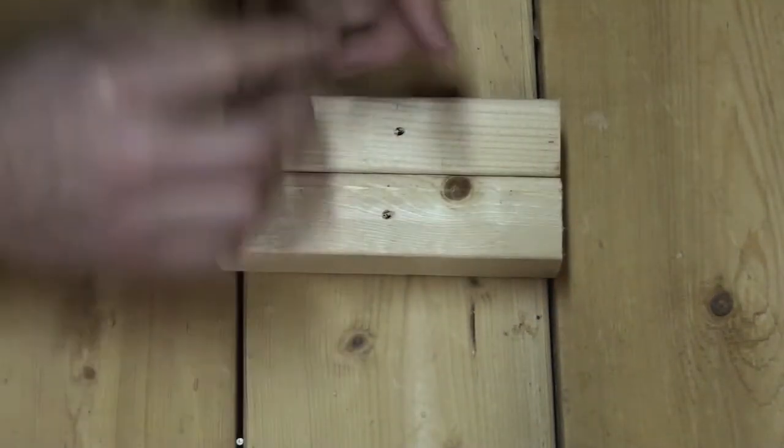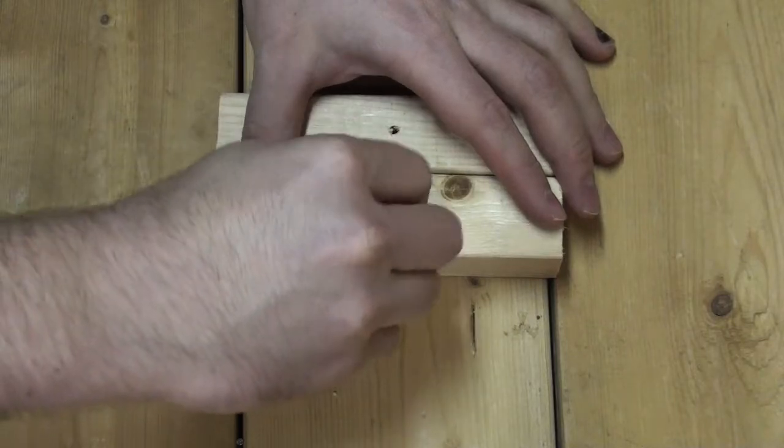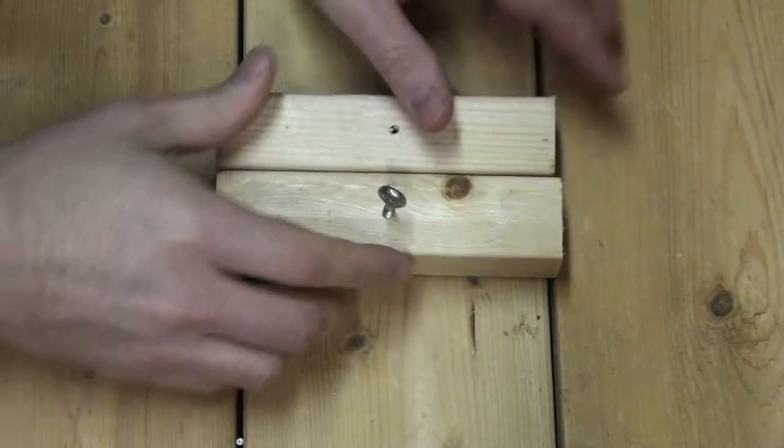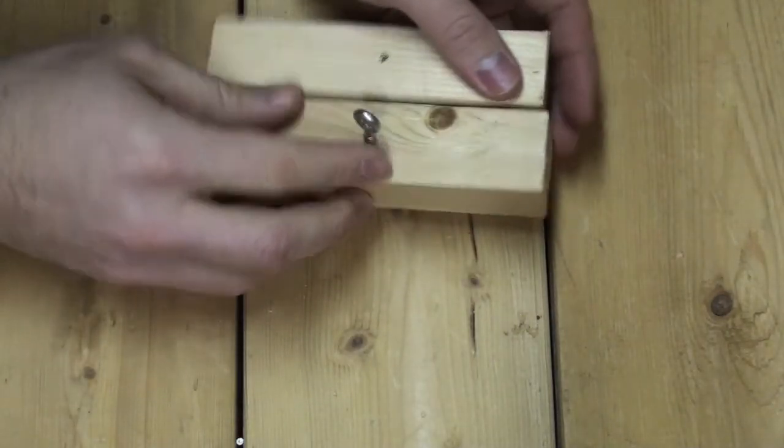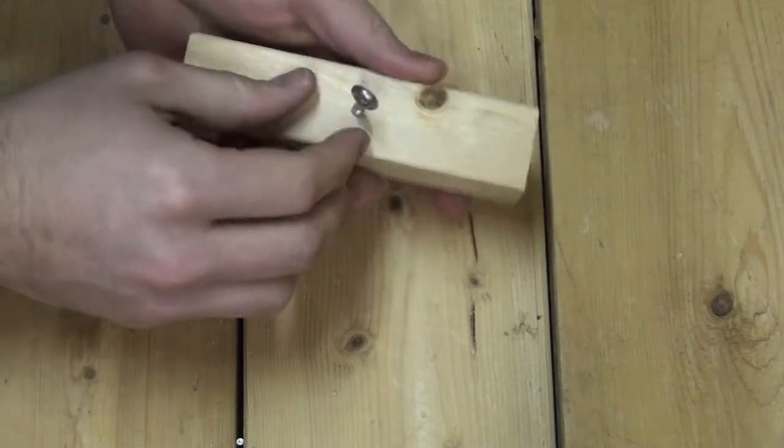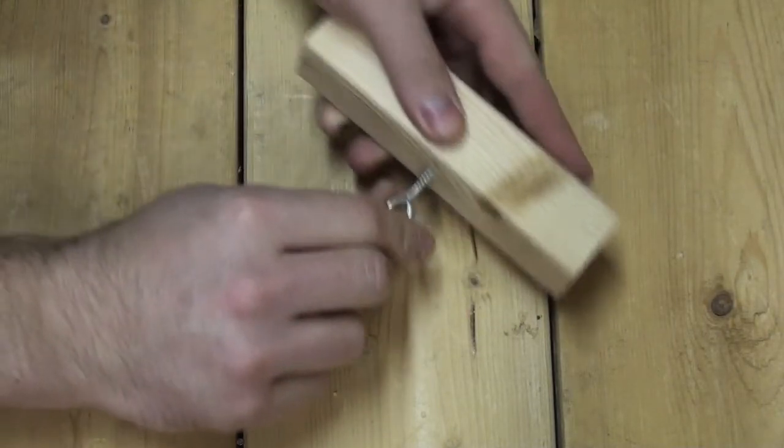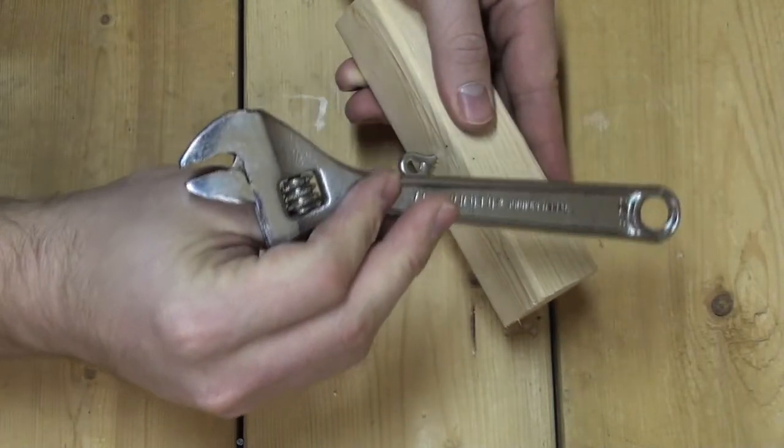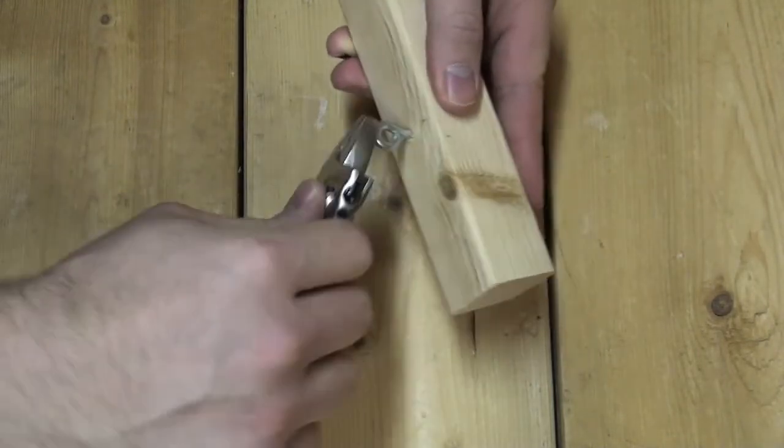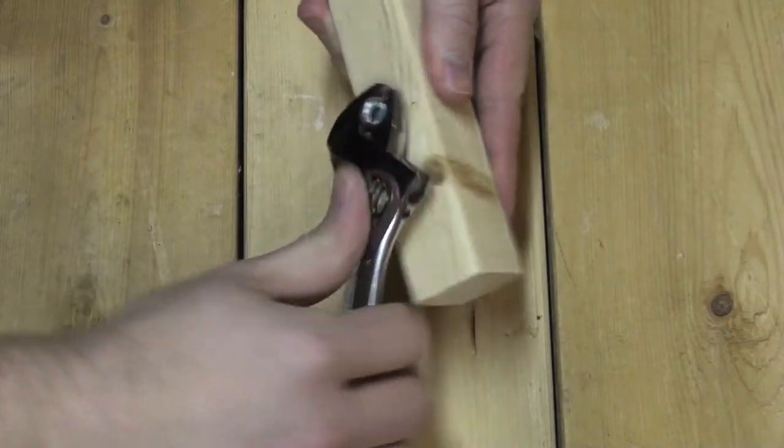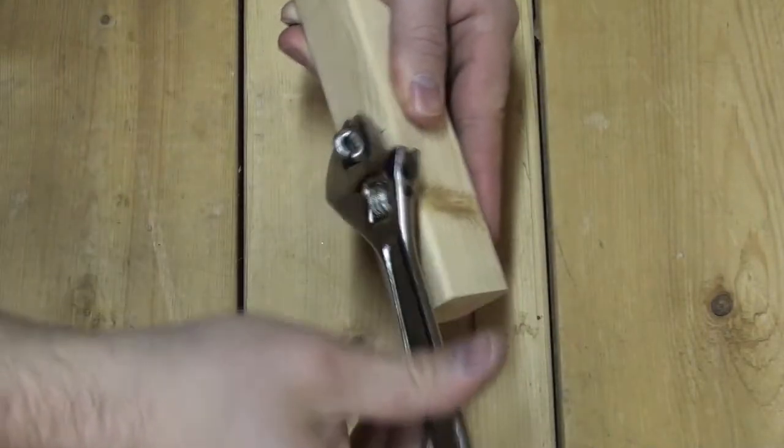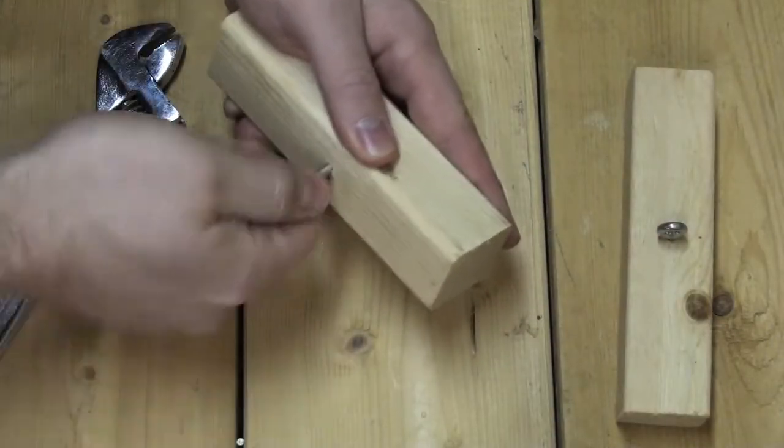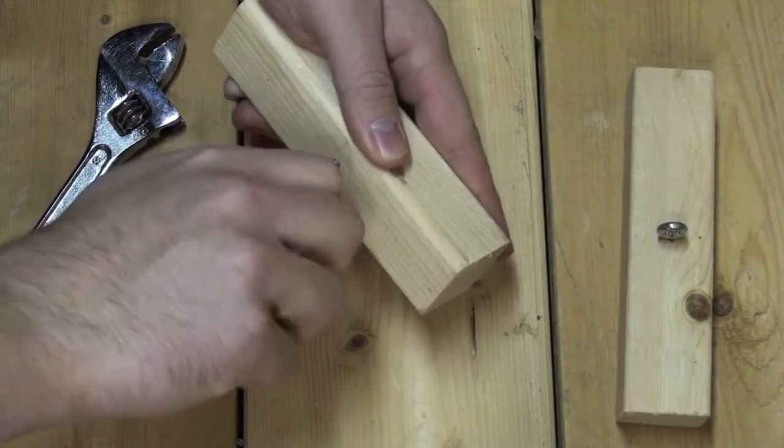You are now ready to place the closed eye hooks into the blocks of wood. You may start by placing them by hand, but you may require an adjustable wrench to finish the job. Simply repeat the steps for the second block.